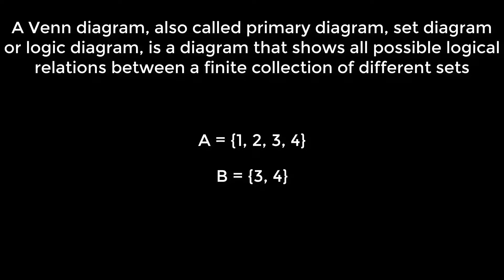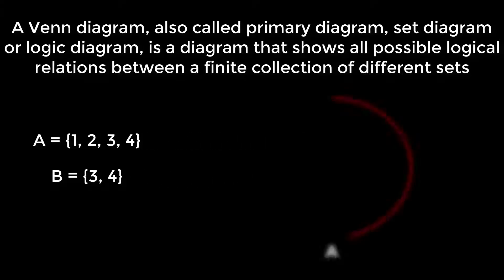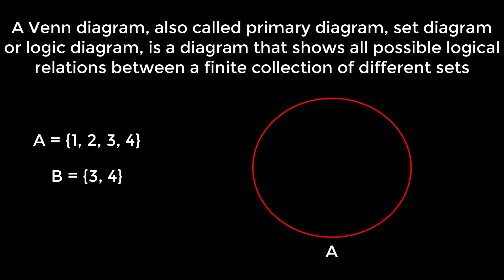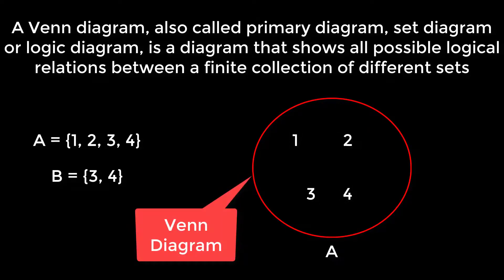If we express the set A with a circle like this and write the elements inside, it becomes a Venn diagram.